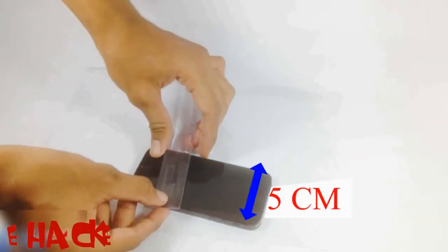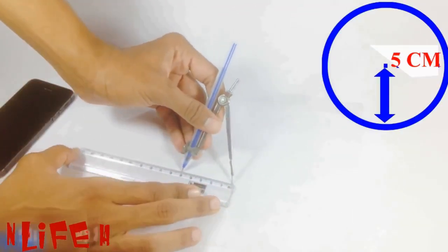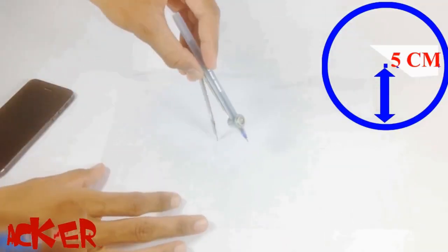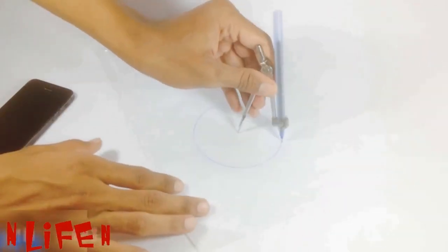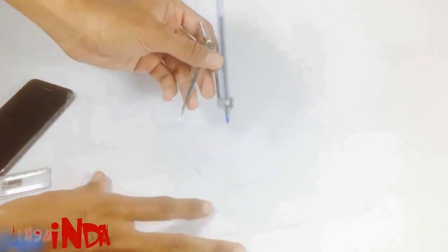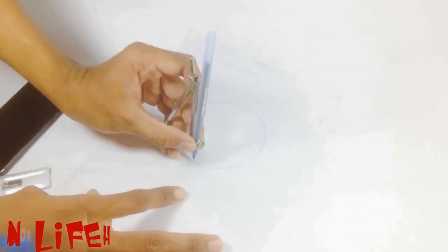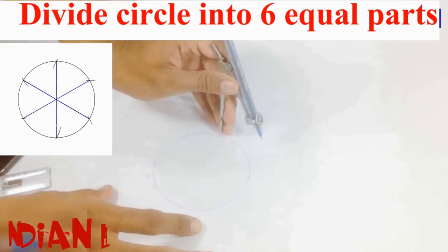You have to make the projector according to your phone. Mine is 5 centimeters wide, so I am drawing a circle of 5 centimeters. Now divide the circle into six equal parts.